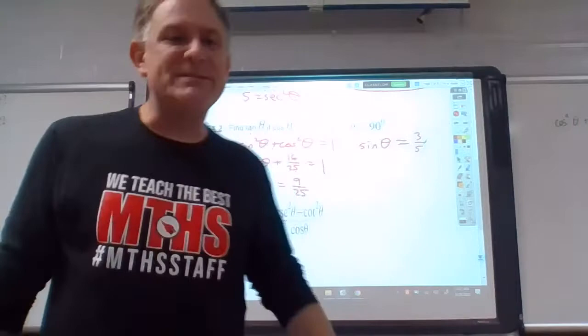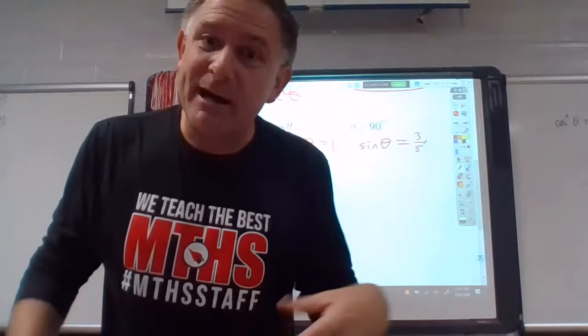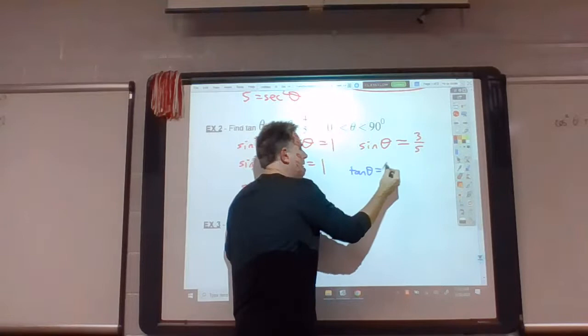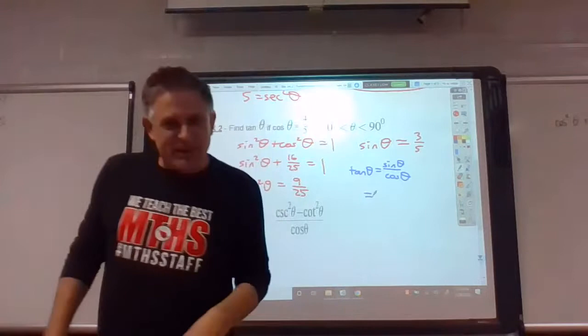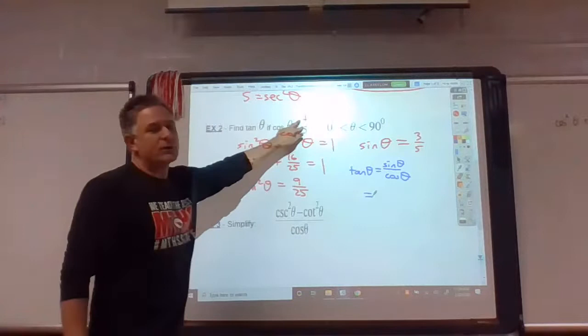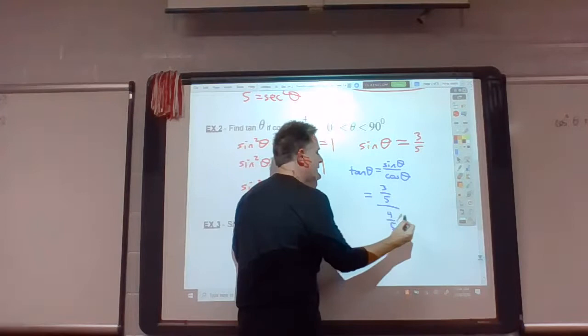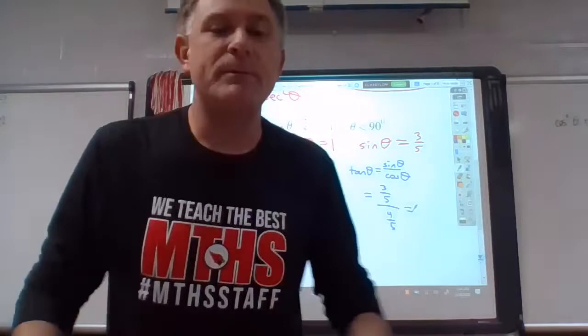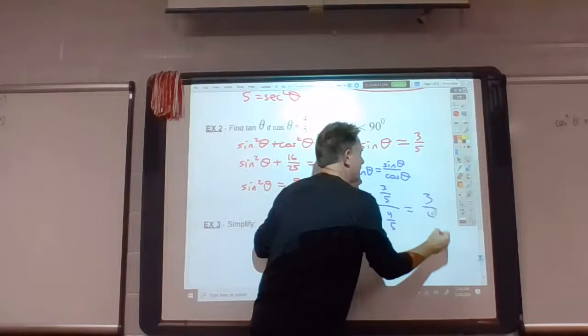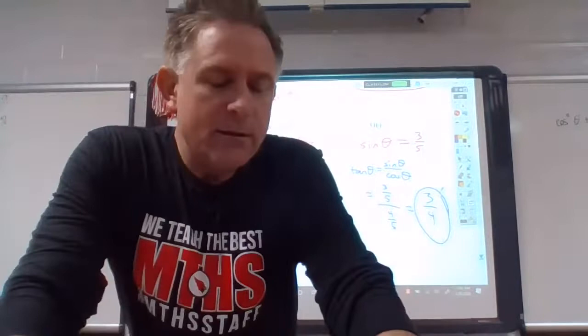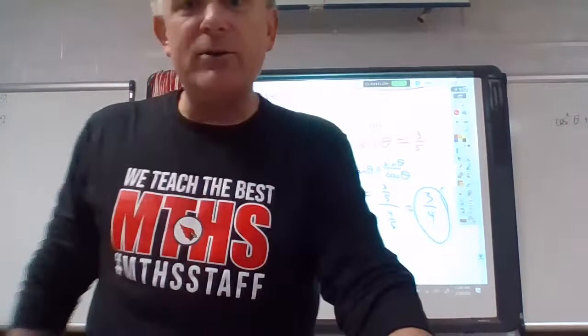So we have sine, but that wasn't the question. The question was tangent. Well, the first thing we learned today was tangent is sine divided by cosine. I'm running out of space so I'm going to write small. Sine is three-fifths, cosine is four-fifths. I'm not going to show the copy, change, and flip. If you can't figure this one out in your noggins, why not? It is three-fourths. So we've solved for tangent knowing cosine. So those first two examples are similar to each other. Give you one trig value, find another one. Not too hard.